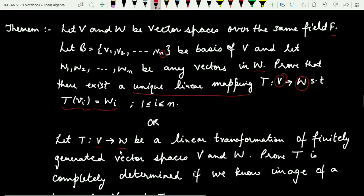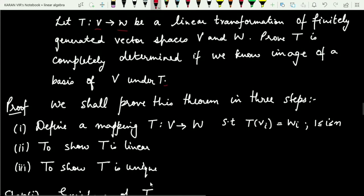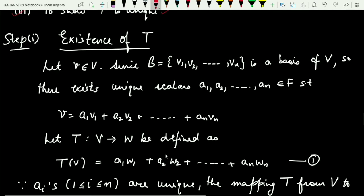We need to observe that in order to prove this theorem we need three steps. The first step will be proving existence of a linear transformation. Secondly, we'll be proving that yes, there is a linear transformation. And thirdly, we'll be proving that yes, it is unique. So the second step confirms T is a linear transformation, and the third step confirms T is unique.